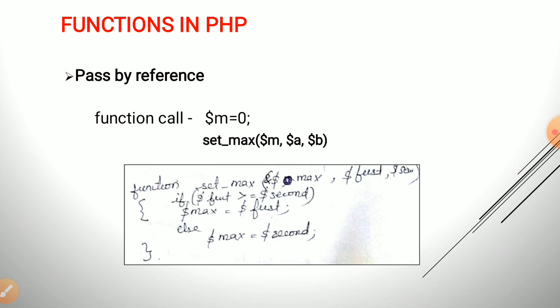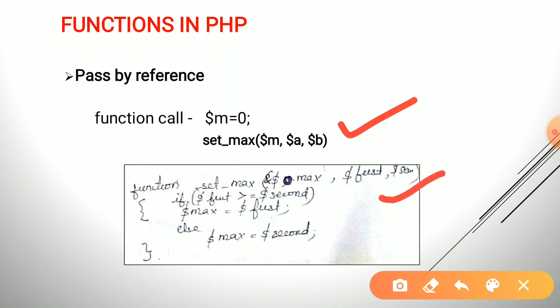Consider this example using pass by reference. The function call is: set_max(dollar m, dollar a, dollar b), where dollar m has a value of 0. These values are received by formal parameters dollar max, dollar first, and dollar second respectively. There is an ampersand symbol before dollar max, meaning we are passing the address of dollar m to dollar max — dollar max is pointing to dollar m. Any changes made to dollar max will be reflected in dollar m. This is the pass by reference method in PHP.